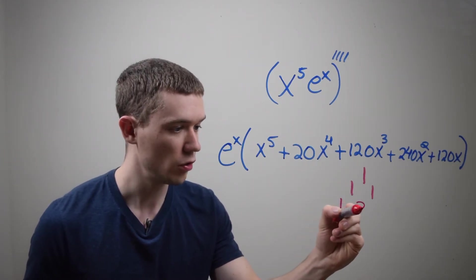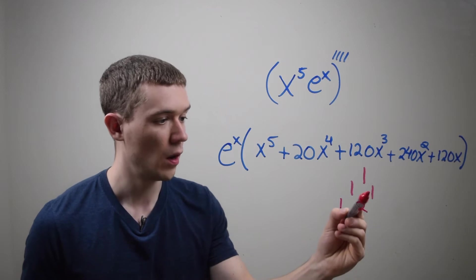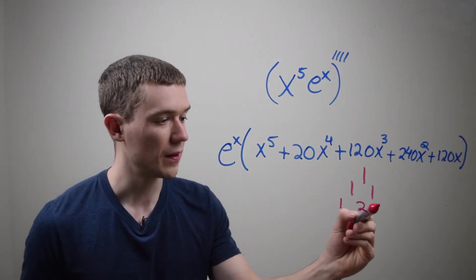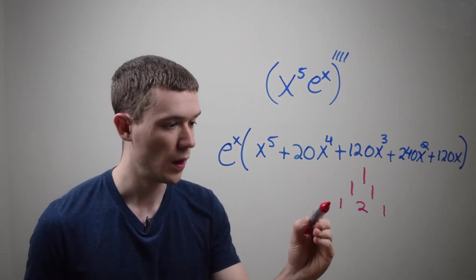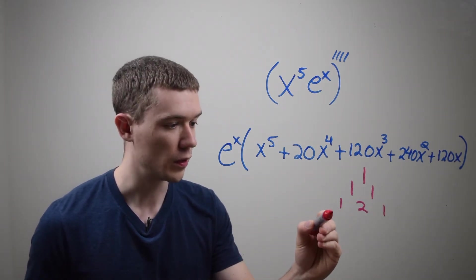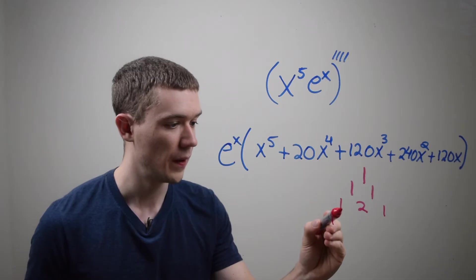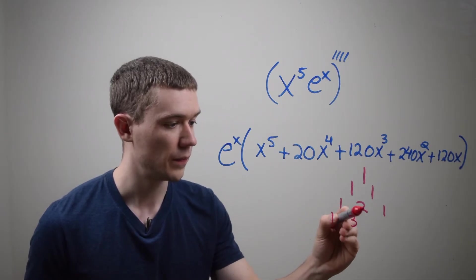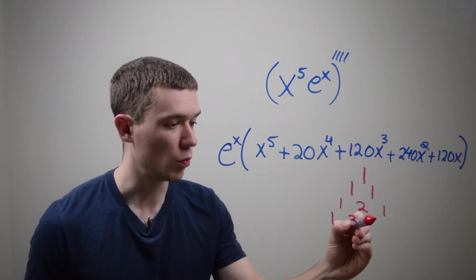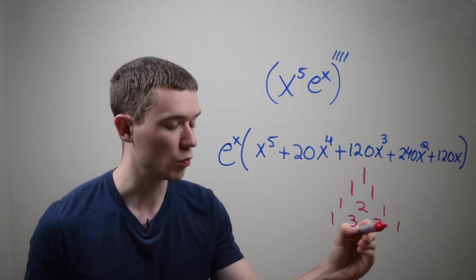One plus one is two. One plus nothing is one. Nothing plus one is one. One plus two is three. Two plus one is three.